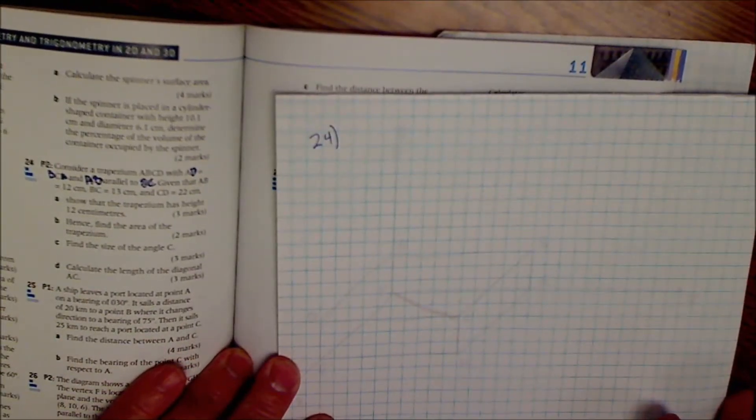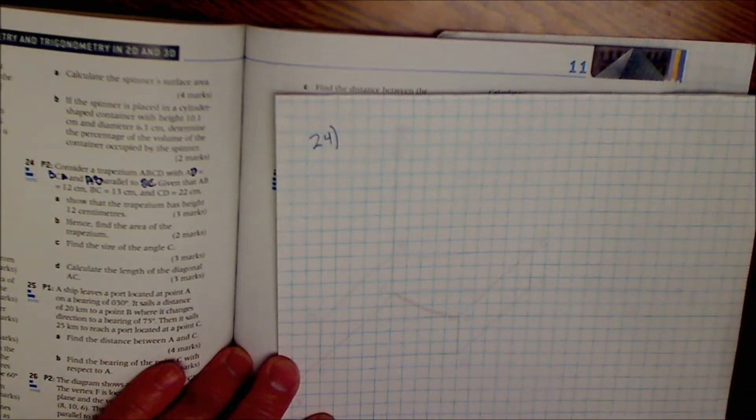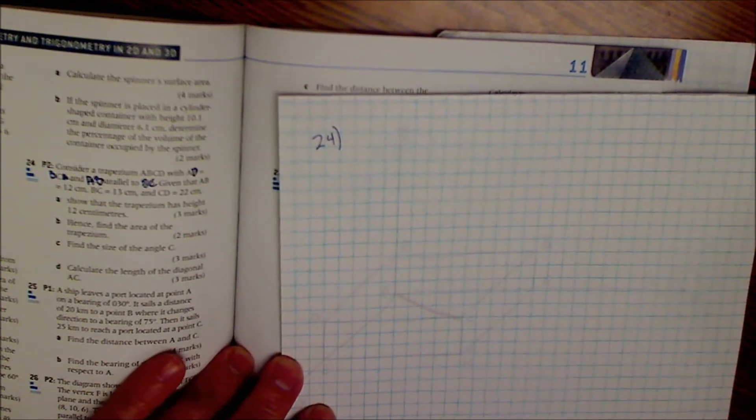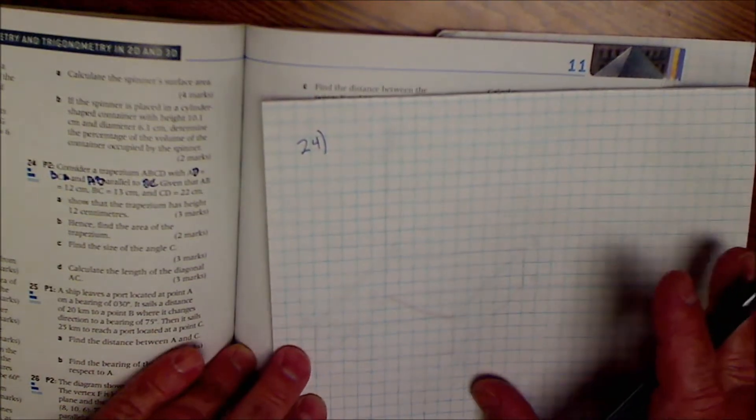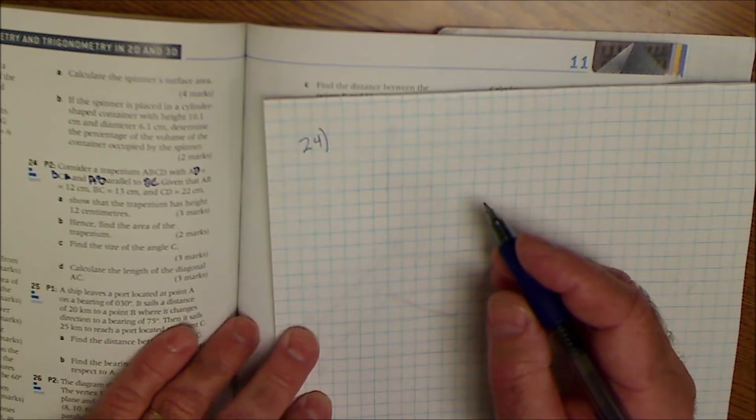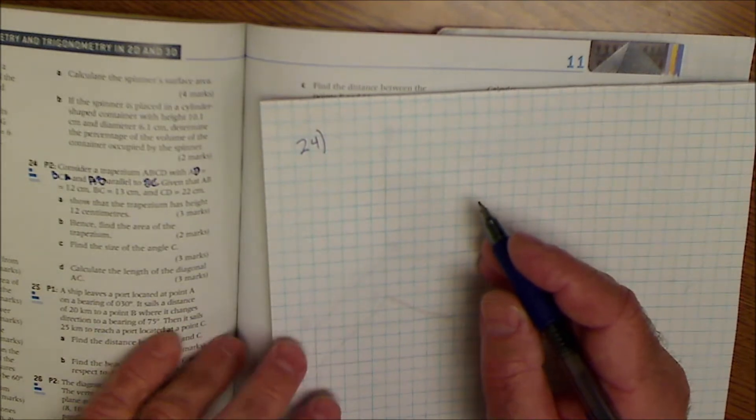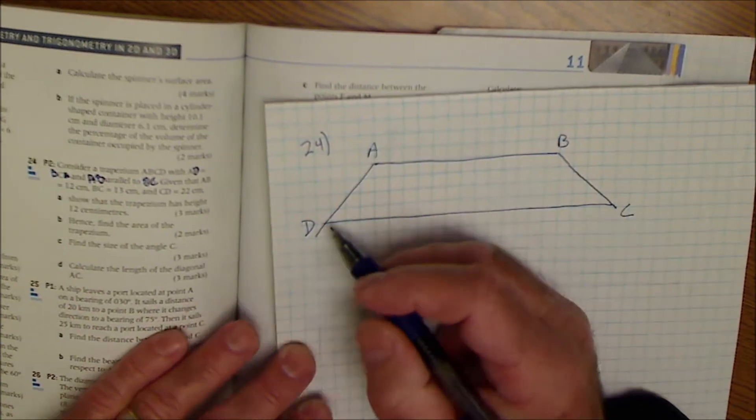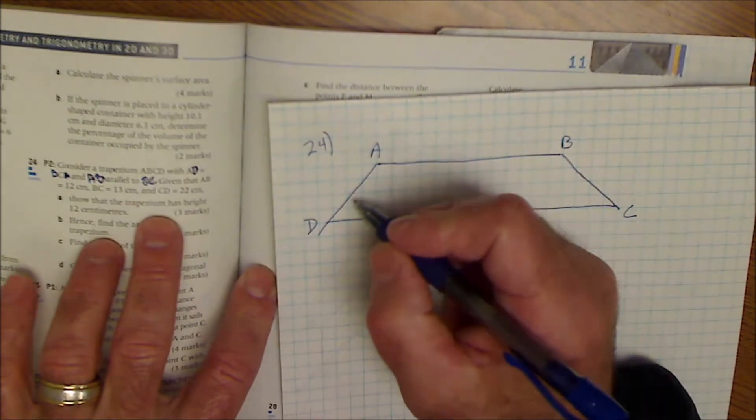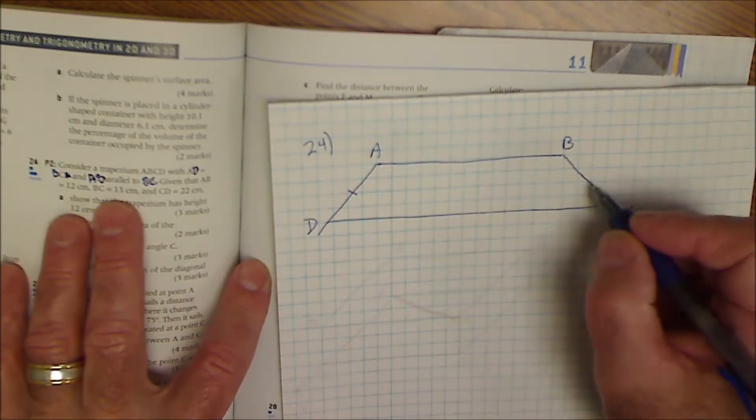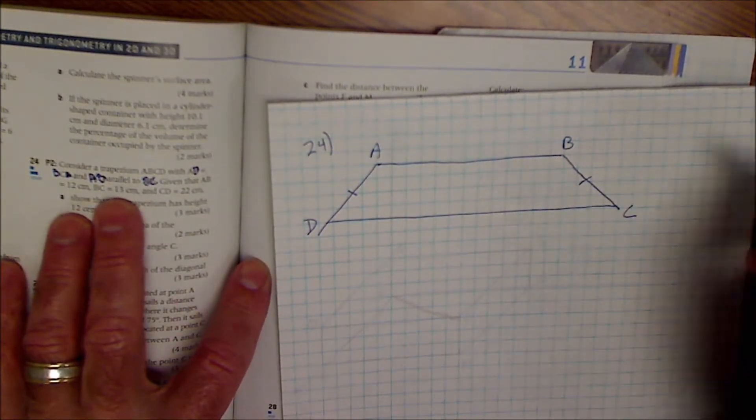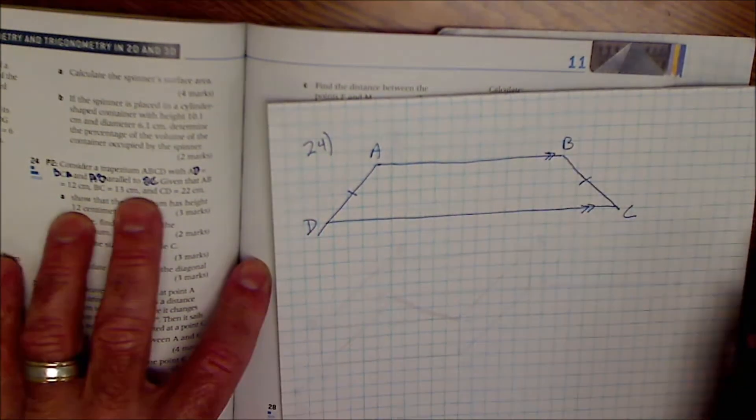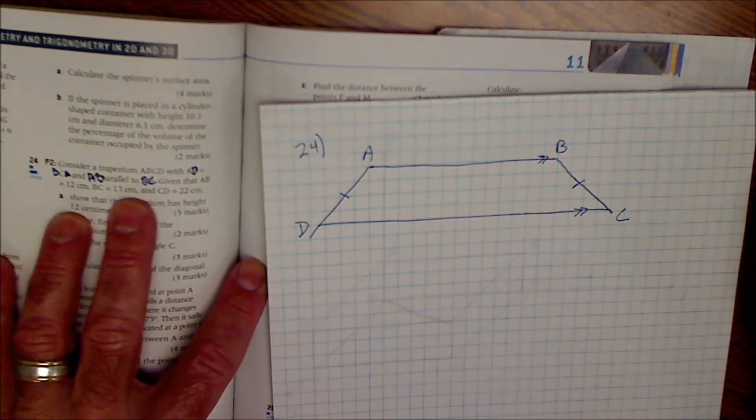I'm starting on number 24 here. A student asked me about this one. I've done it ten times and checked it in the back of the book and I think in fact there's a typo. So it says consider a trapezium ABCD. Trapezium is the same as a trapezoid and it should say AD is equal to BC. So consider a trapezoid ABCD with AD equal to BC, and AB is parallel to DC.